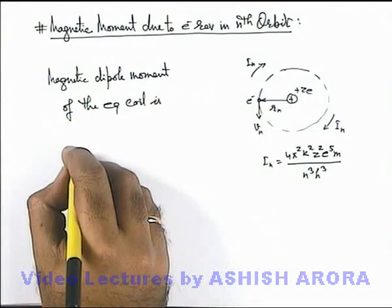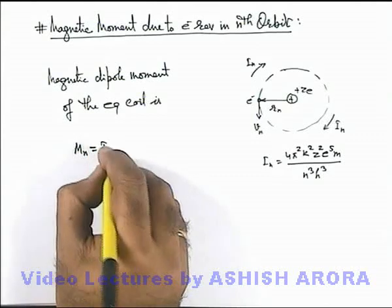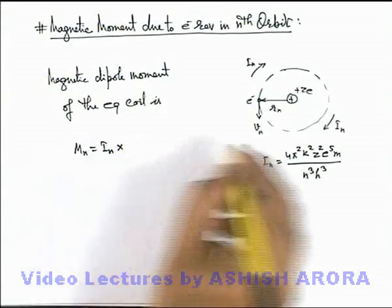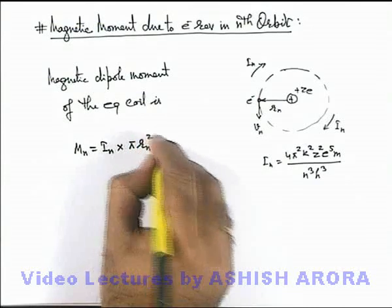Here this can be given as m-n, and the value is current multiplied by the area enclosed by the current, which here is pi r-n square.